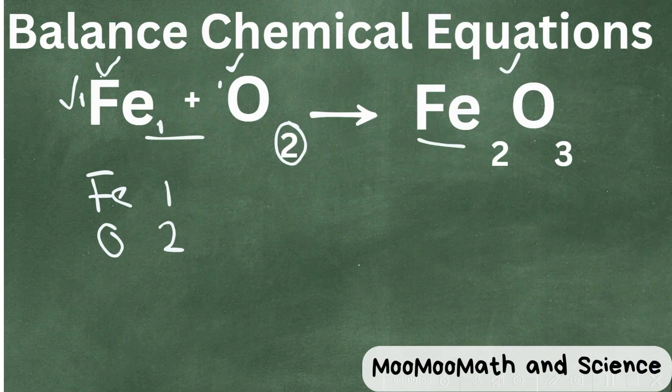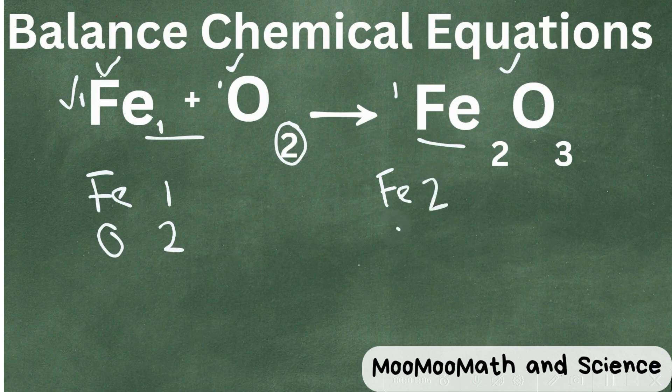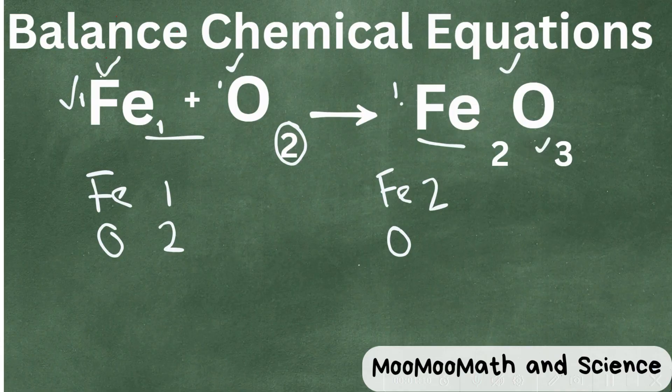On the product side, we have iron. We have a 1 here, 1 times 2 is 2. And with the oxygen, we have 1 times 3, so that gives us 3. So you can tell we are not balanced.